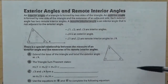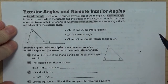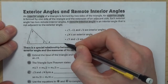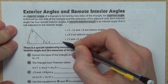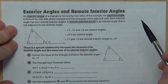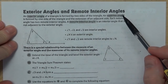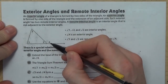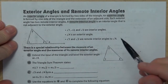An interior angle of a triangle is formed by two sides of the triangle — angles one, two, and three are interior angles. An exterior angle is formed by one side of the triangle and the extension of an adjacent side. When you extend one side, it creates the exterior angle, so angle four is an exterior angle. Each exterior angle has two remote interior angles — a remote interior angle is one that is not adjacent to the exterior angle. So angles one and two are the remote interior angles for angle four.